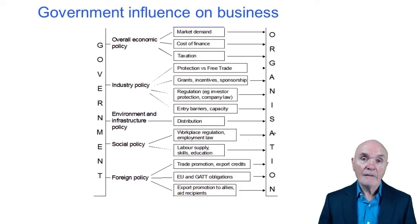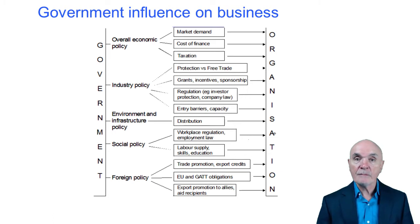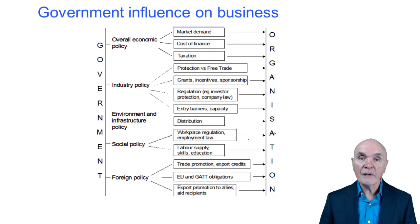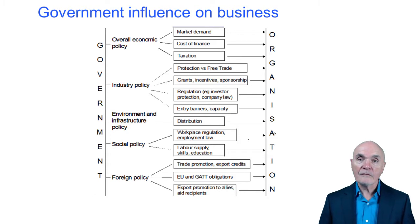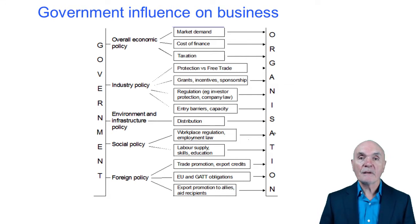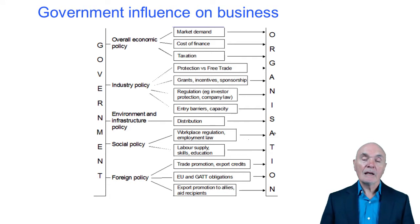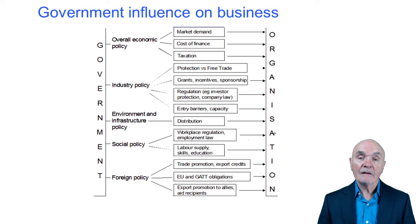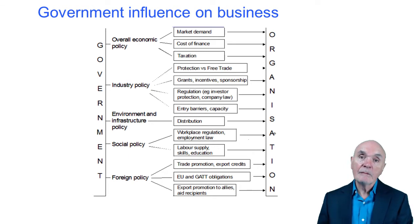Social policy — if the government says once you hire somebody you can never make them redundant and can never dismiss them no matter how useless they are, in that very extreme situation companies are going to be very reluctant indeed to hire more people. Because if they make an error or if the business has a downturn and they're left having to pay a high wage bill, people are going to be very reluctant to employ people. However, if there's a more reasonable form of employment protection, so that economic necessity could be put up as a reason to make people redundant, then the chances are that employment rates in general are going to be lower — people will employ people knowing that in an emergency they can actually get rid of them.